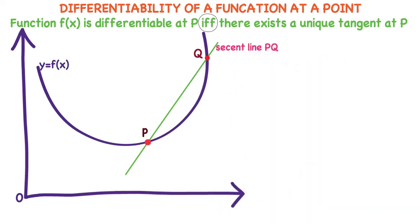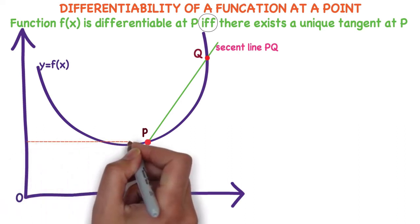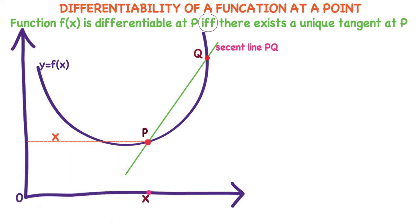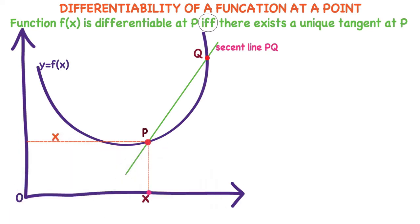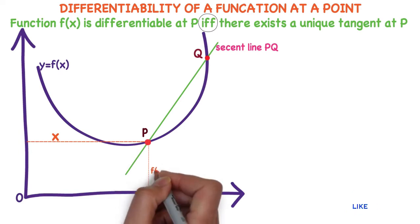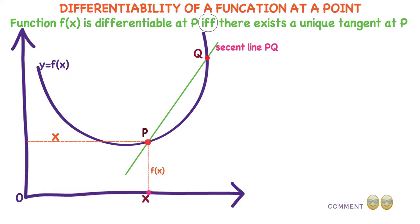Observe the diagram. What is the point p? p is a point which is at a distance of x units from the y-axis. This length — the height of the curve — is f(x). So from the diagram, it can be understood easily: what is the point p? Point p is (x, f(x)).